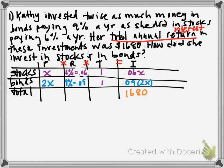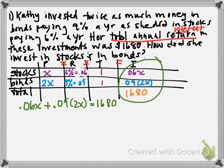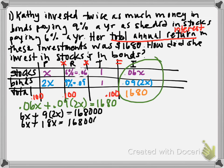To solve this problem, we're going to create an equation. The amount of interest earned from stocks plus the amount of interest earned from bonds equals the total amount of interest earned. We've got decimals, and at most two digits after the decimal point, so we're going to multiply everything by 100. Now we're dealing with 6X plus 9 times the quantity 2X equals 168,000. We get 6X plus 18X equals 168,000. That's 24X equals 168,000. Divide both sides by 24, and luckily 24 goes evenly into 168,000.